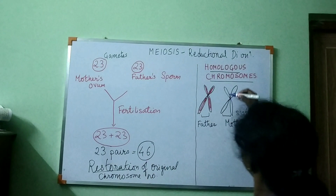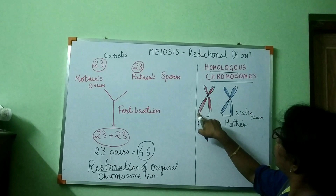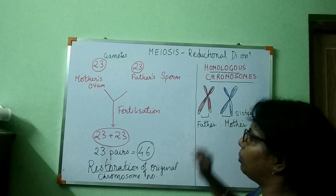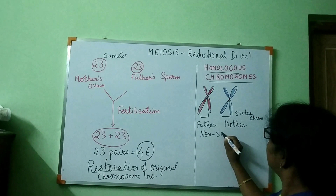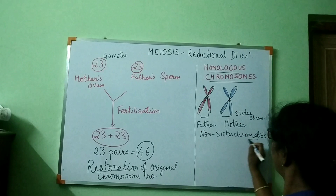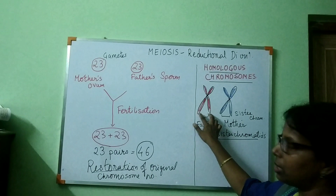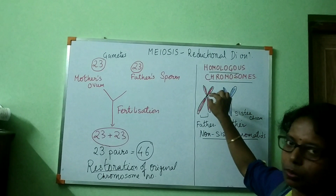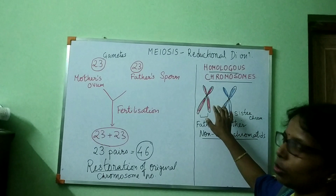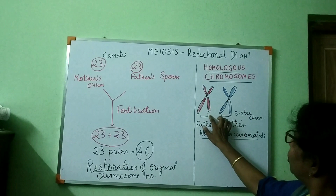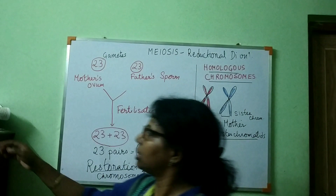The red chromatids are sister chromatids with each other, and the blue chromatids are sister chromatids with each other. One red and one blue together are non-sister chromatids. These two chromosomes — one from the father and one from the mother — look the same, so they are homologous chromosomes. Each arm of the homologous pair from different chromosomes is known as a non-sister chromatid.